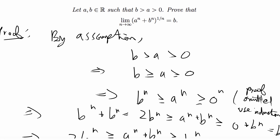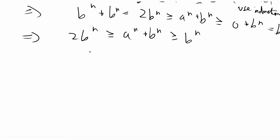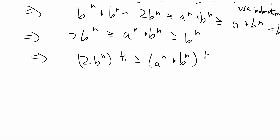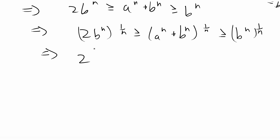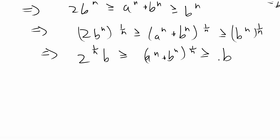Next, looking at what we want, we're going to take all terms to the 1/n power. So we get (2b^n)^(1/n) ≥ (a^n + b^n)^(1/n) ≥ (b^n)^(1/n). Distributing the exponent on the left: 2^(1/n) · b^(n · 1/n) = 2^(1/n) · b. And on the right we just get b. So the left-hand side simplifies nicely.